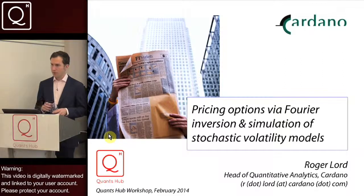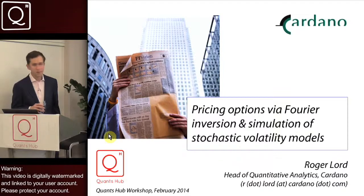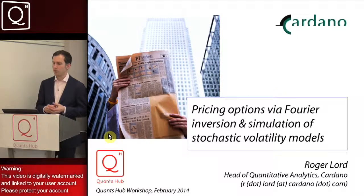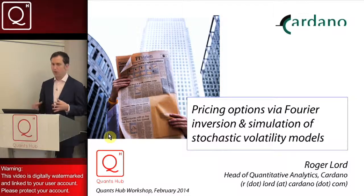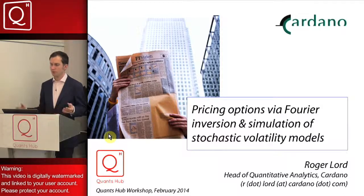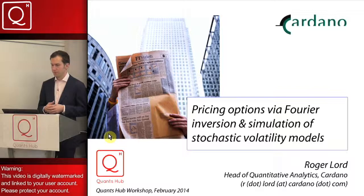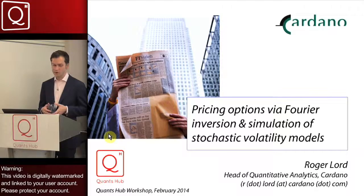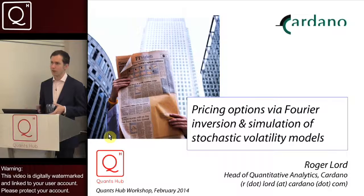The second part on simulation of stochastic volatility models deals with the follow-up question: once you've calibrated your model to the market, you want to start using it — pricing exotic derivatives, computing CVA/DVA charges on your portfolio. Anyone who has tried to simulate Heston with a simple Euler approximation will have run into problems: the variance process can and will go negative, so you have to take special care of the boundary condition.